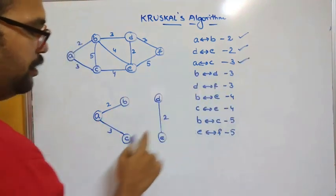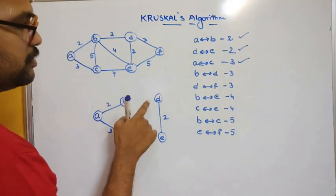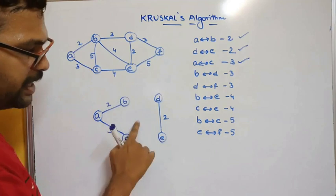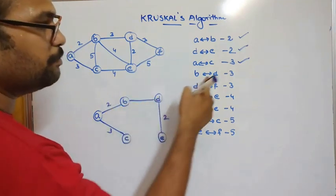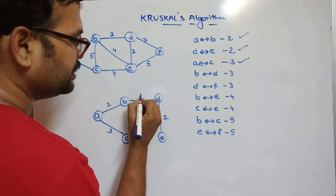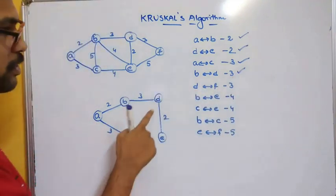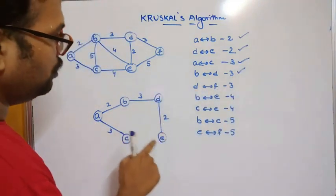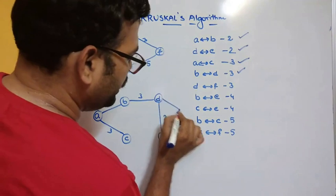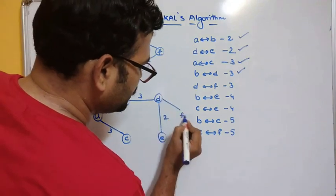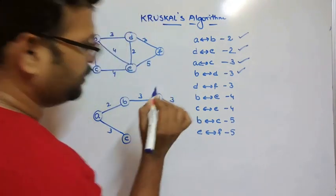Next, B to D with cost 3 — it does not form a cycle, so include it. Then D to F with cost 3 — there is no cycle, so construct and include F. D to F, cost 3.